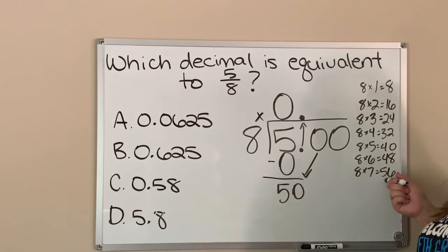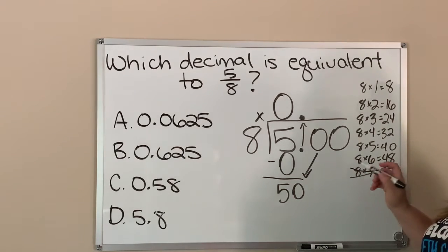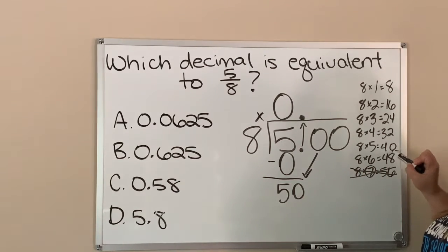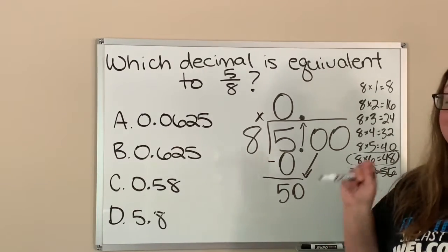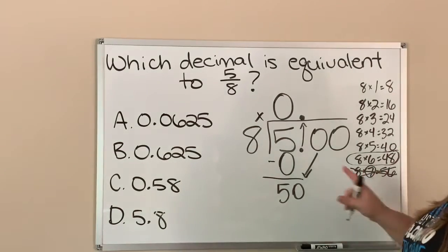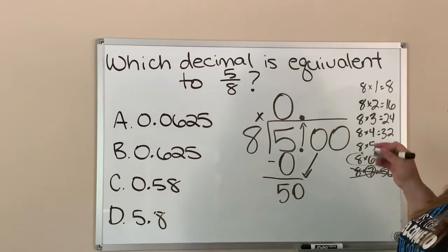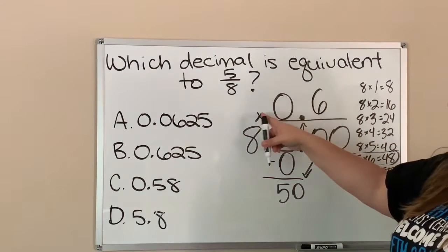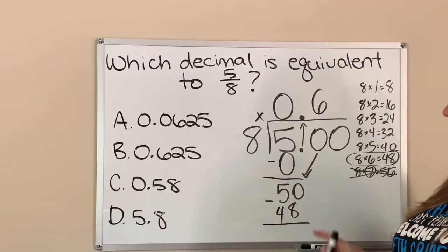I'm going to stop right there because 56 is already bigger than 50, so eight cannot go into 50 seven times. The next number as close to 50 as I can get is 48 — that's six times eight, or eight times six is 48. It rhymes, so it's easy to remember! Eight can't go into 50 evenly, but it can get very close with six. So I put my six here.